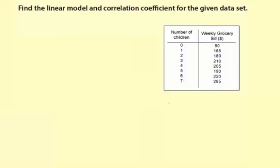Find the linear model and correlation coefficient for the given data set. Here we have number of children versus weekly grocery bill. I think if you have more kids, your groceries will get more expensive. It's just common sense. But here's some data, so we'll take a look and see if the data supports that.